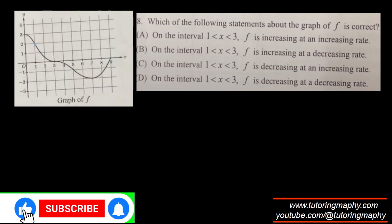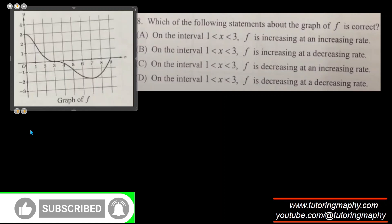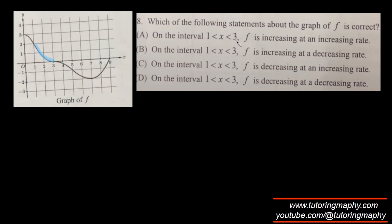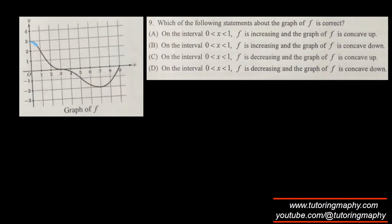In this question we analyze between x = 1 and x = 3. Between one and three, is the function increasing or decreasing? The function is coming down with increasing x, so it is decreasing. Is the rate increasing or decreasing — meaning what is the concavity? The function appears to be concave up, like a smiling face, so the rate is increasing. The answer is option C.